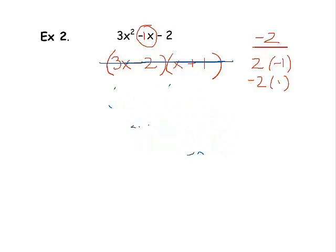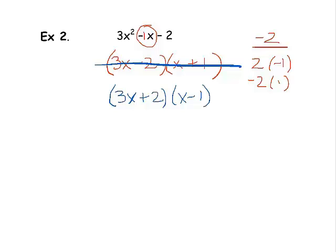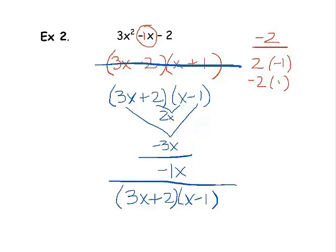So we have to try the different combinations on this one. What about 3x plus 2 and x minus 1? Let's just check these two things because they seem to be what's causing the issue. This would get me negative 3x. This would get me 2x. If I add those up, I get my negative 1x. So I think we have a winner here. We were able to factor this to 3x plus 2 times x minus 1.